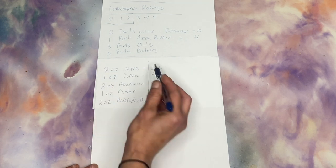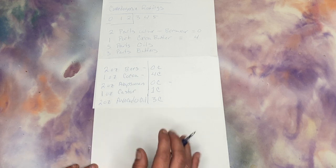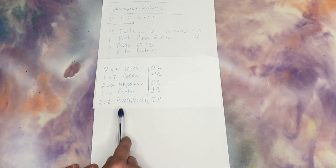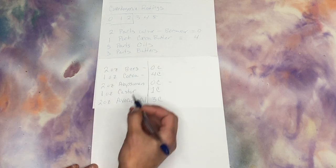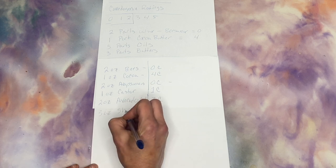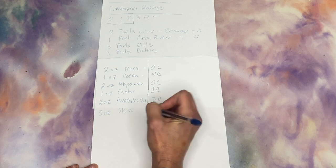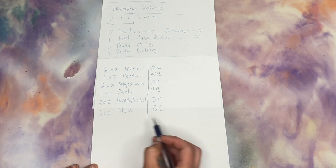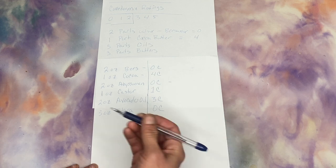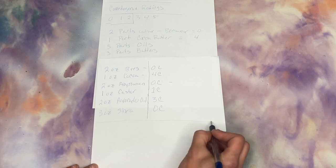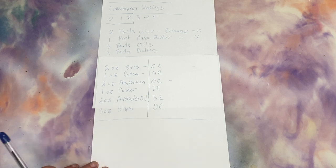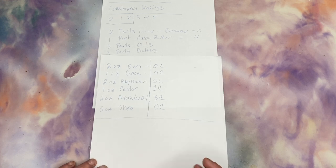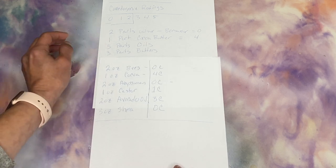For the three parts of butters, avocado butter has a very high comedogenic rating, so I'm not using it here since we already have avocado oil. Mango and shea both have very low comedogenic ratings. Because I'm a sucker for shea, I'm putting all three butter parts in shea. You could do half shea, half mango, or even shea and a small amount of coconut oil — but we'll talk during the making process about why I personally don't put coconut oil in leave-on products. Now it's time to get everything out and do the thing.